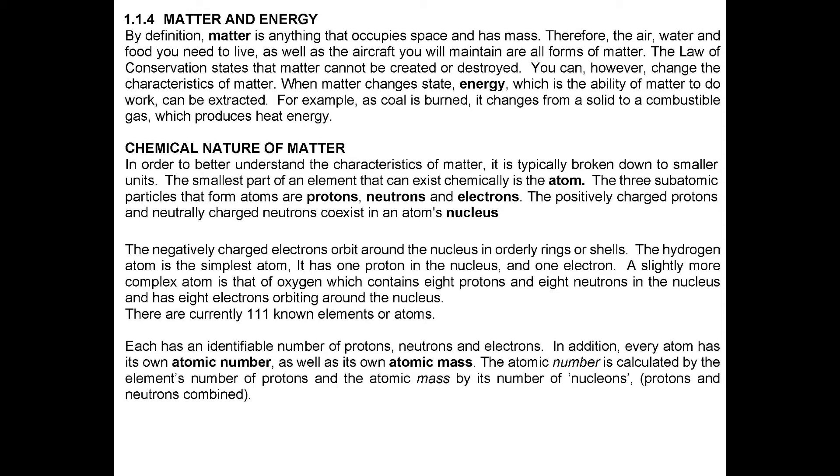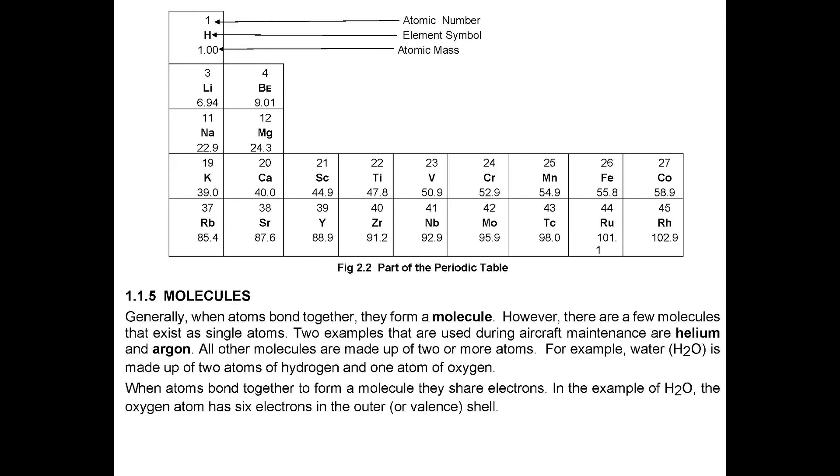There are currently 111 known elements or atoms. Each has an identifiable number of protons, neutrons, and electrons. In addition, every atom has its own atomic number, as well as its own atomic mass. The atomic number is calculated by the element's number of protons and the atomic mass by its number of nucleons, protons and neutrons combined.